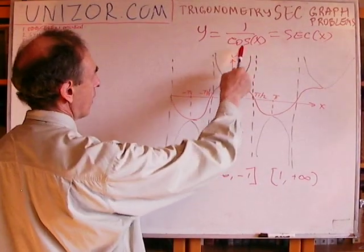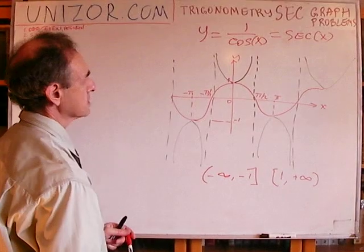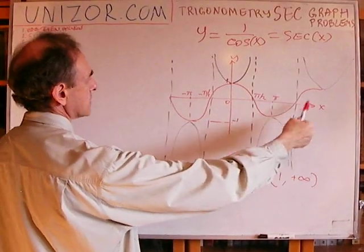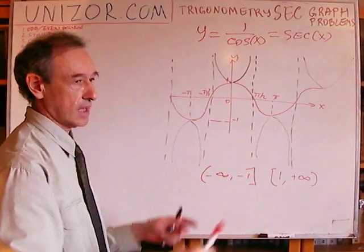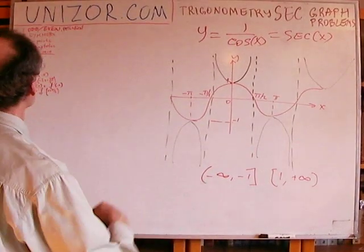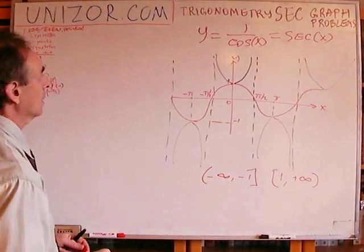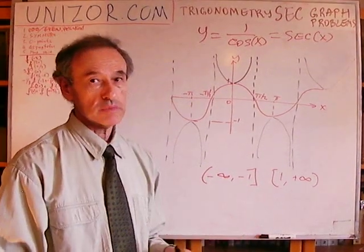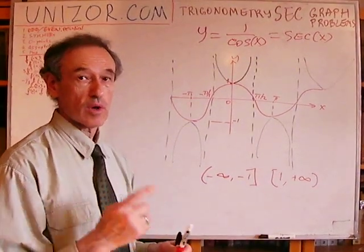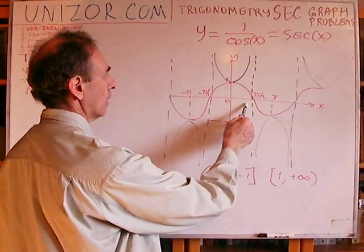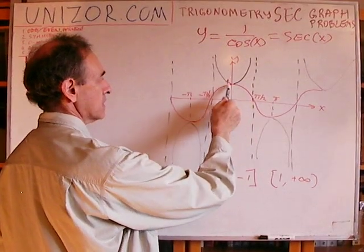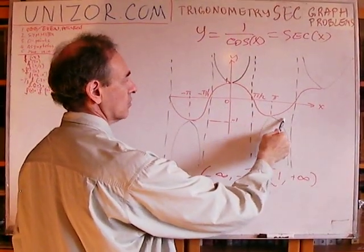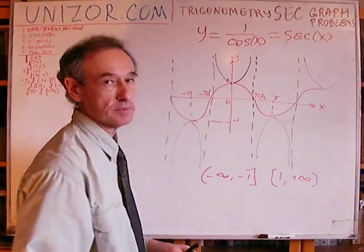Asymptotes are where cosine equals zero, which is π/2 plus π times any integer, positive or negative. There is no absolute maximum or minimum, but there is a local one. On each interval, there is either a local minimum of 1 or a local maximum of -1.